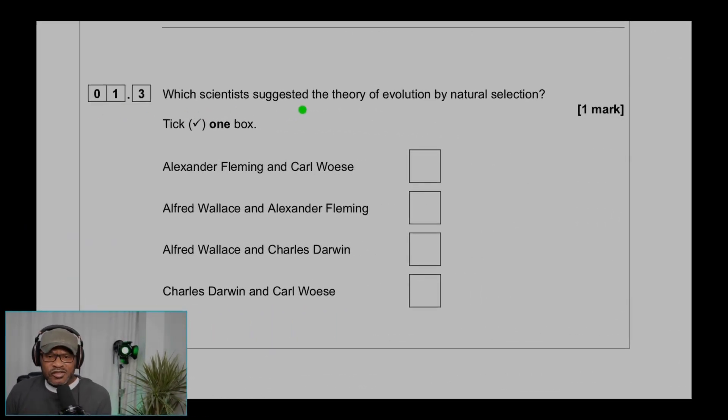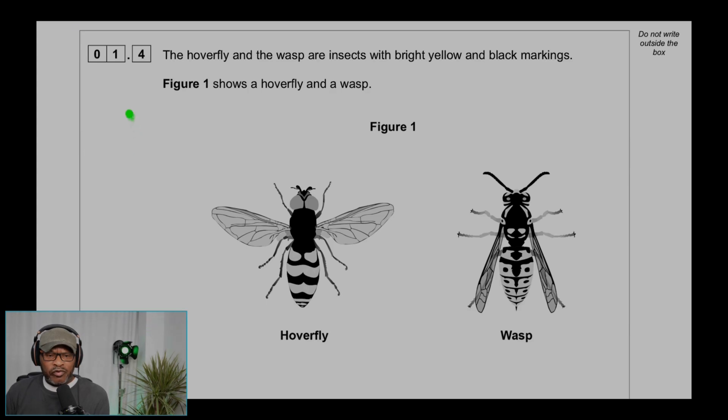Question 1.3: Which scientists suggested the theory of evolution by natural selection? Tick one box. Alexander Fleming and Carl Weiss. Alfred Wallace and Alexander Fleming. Alfred Wallace and Charles Darwin. That would be it. Charles Darwin and Carl Weiss. So it would be Alfred Wallace and Charles Darwin.